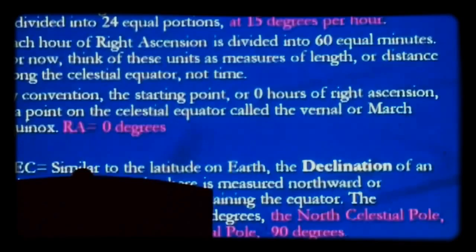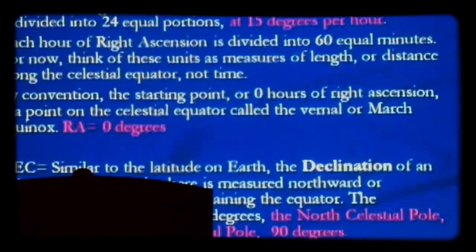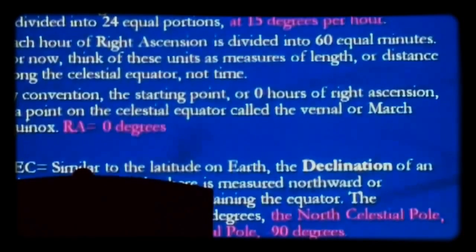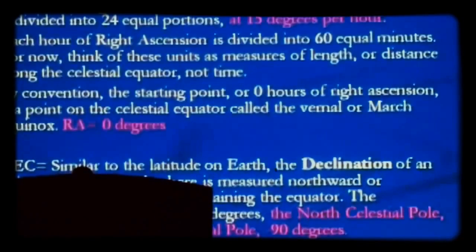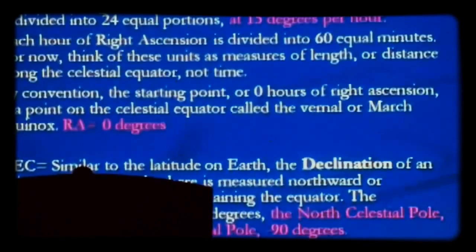The north celestial pole, which we talked about earlier, is very, very close to Polaris at the end of the Little Dipper — that's going to be plus 90 degrees declination. If we could magically see through the Earth to the celestial south pole, that would be negative 90 degrees. Right ascension is the first coordinate and is given in hours, minutes, and seconds. Declination is the second coordinate and is given in degrees.